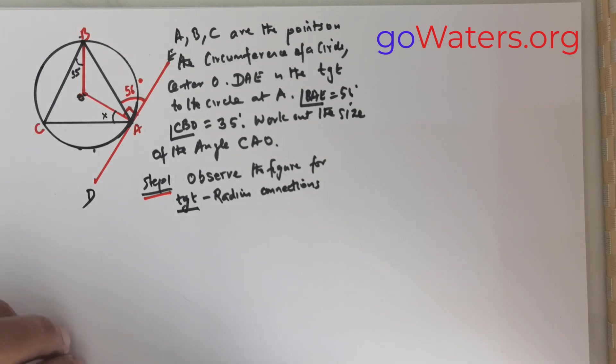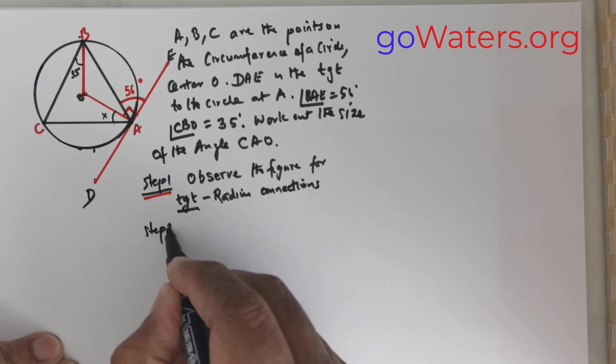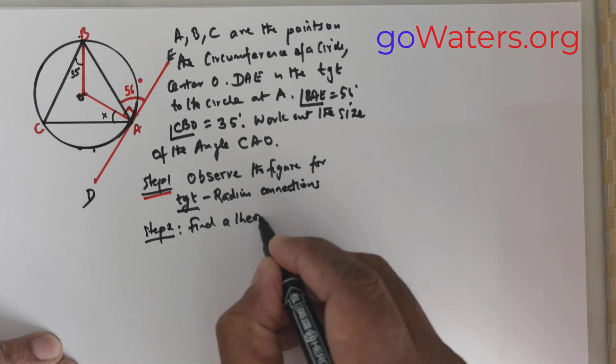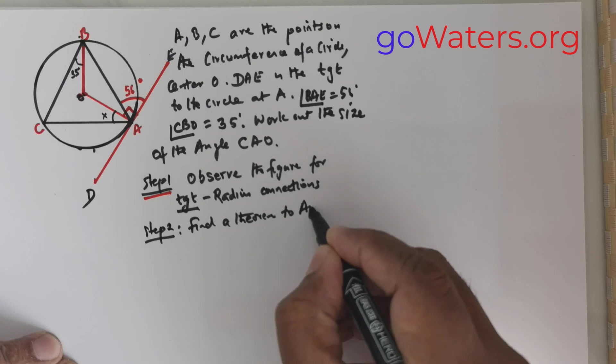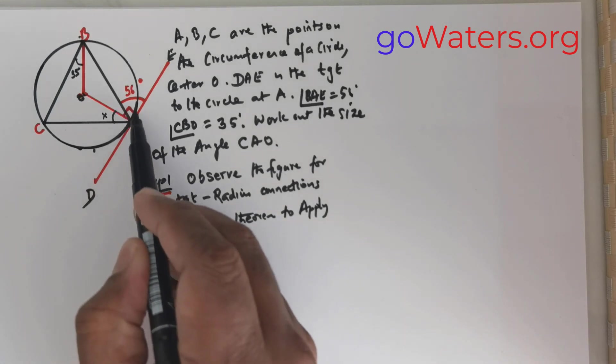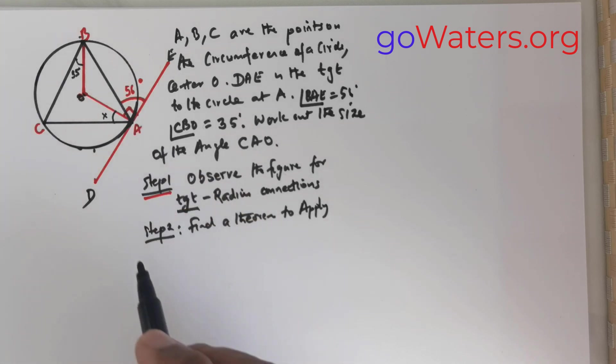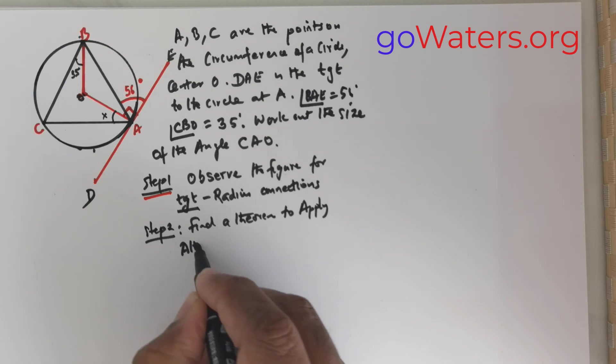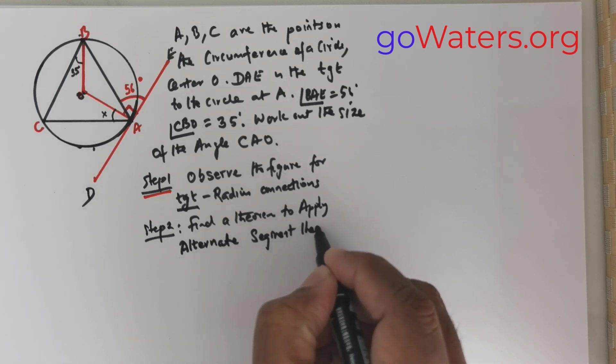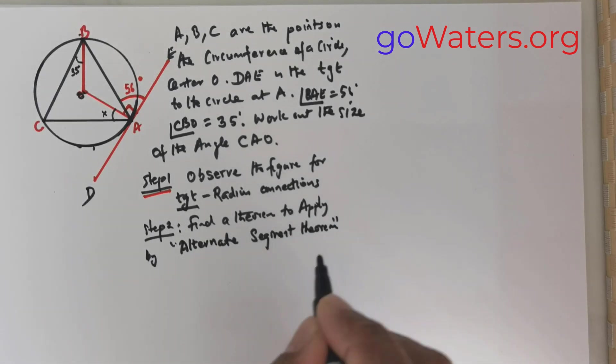Step two, you already see an angle here. You have to find a theorem to apply. That's the most important step. You have to find a theorem that you can utilize. Now I clearly see there is an angle that has been given to us between the tangent and one of the sides. So I can utilize that beautiful theorem which is called as alternate segment theorem. This is the theorem I can use.